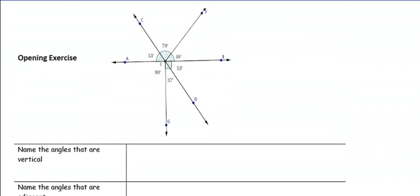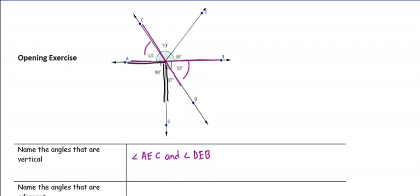In our opening exercise, name the angles that are vertical. Vertical angles are formed by two straight lines. A pair of vertical angles would be Angle AEC and Angle DEB. Name the angles that are adjacent — adjacent angles are next to each other and share a common ray. An example would be Angle AEG and Angle GED.